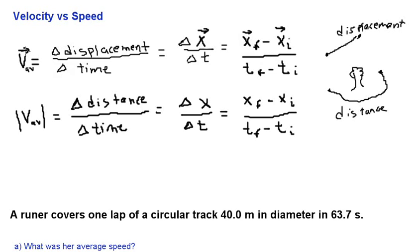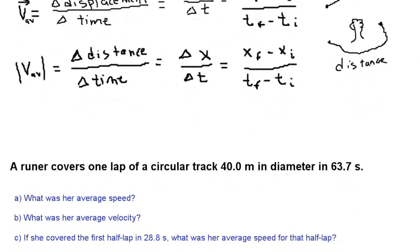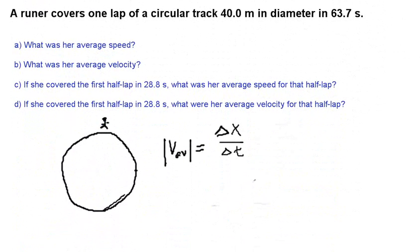For average velocity, I use a vector here at the top to represent that it is velocity. And when it comes to speed, I use the absolute values to indicate that we only want the magnitude and not the direction. So I don't want to confuse you. I want to just go ahead and start doing one problem so you can see how these definitions apply.